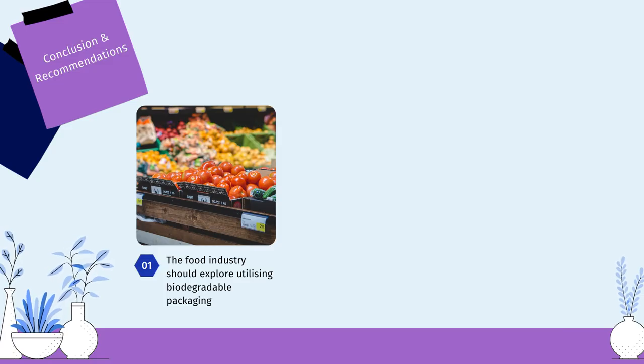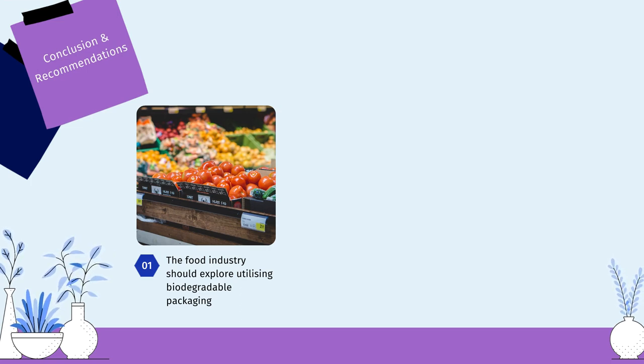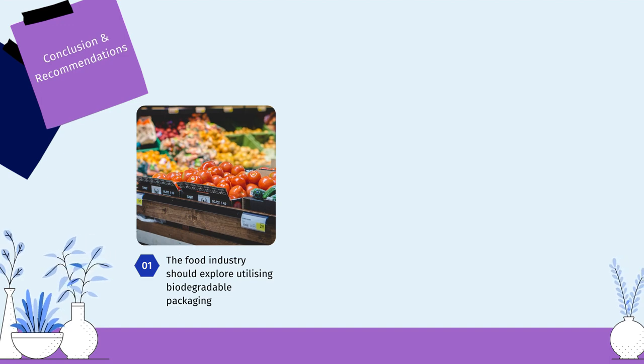To summarize, we learned about the manufacturing of polystyrene packaging, its life cycle, and the negative influence it has on our environment. Thus, we should attempt to use as little polystyrene as practicable. To minimize its use, the food industry should explore utilizing biodegradable packaging such as paper packaging and other environmentally sustainable packaging that is significantly greener than polystyrene.